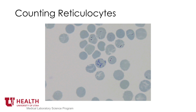The number of reticulated cells is determined by counting 1000 red blood cells; red blood cells will appear bluish green. Count 500 cells on one slide and 500 cells on the second slide. The reticulocyte count is determined by examining consecutive fields of the smear; reticulated cells have dark bluish green staining strands or granules inside of them.